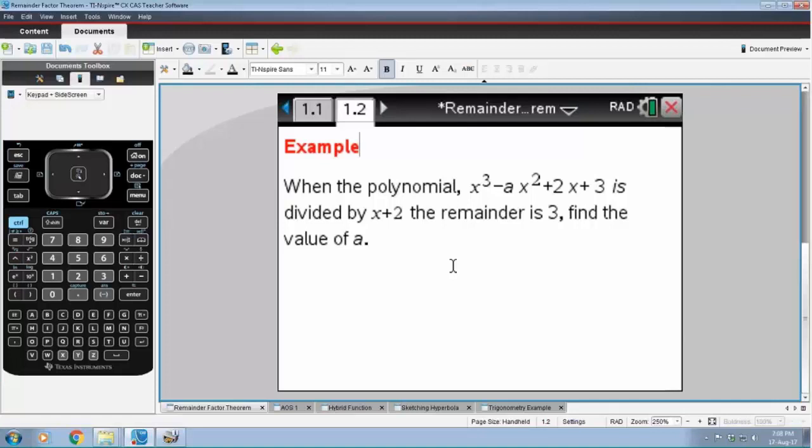So for example, if the polynomial X cubed minus AX squared plus 2X plus 3 is divided by X plus 2, the remainder is equal to 3. So what we want to do is we want to find this value of A.